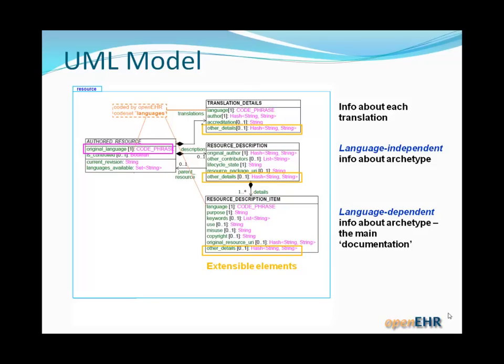It could be argued that these need to be a bit stronger to enable, for example, coded keywords. Currently they're just strings, and that may well happen in the next revision of OpenAIR and ISO 13606. We also have lifecycle state, and that's certainly likely to be coded in future versions of these models.